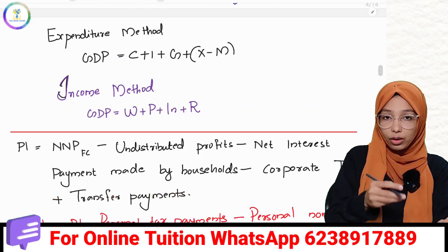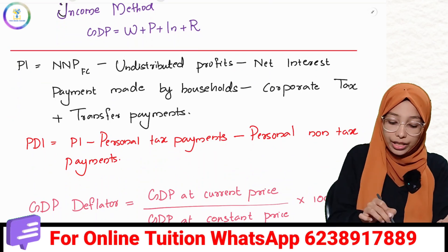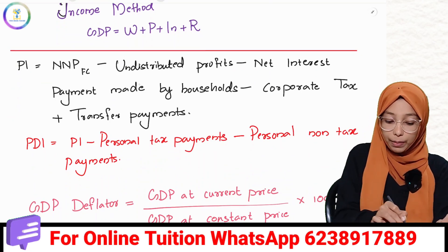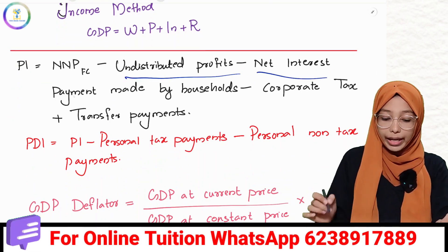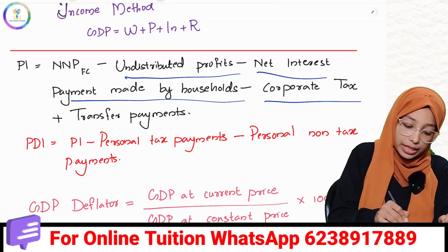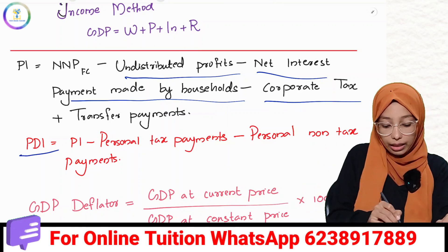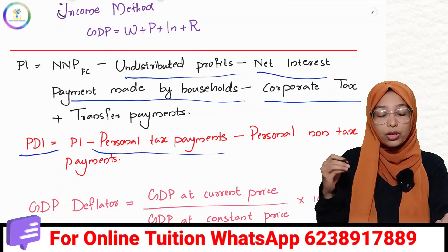For personal income, take NNPFC and subtract undistributed profit, net interest payments made by households, and corporate taxes, then add transfer payments. Personal disposable income, PDI, subtract personal tax payments and non-tax payments.